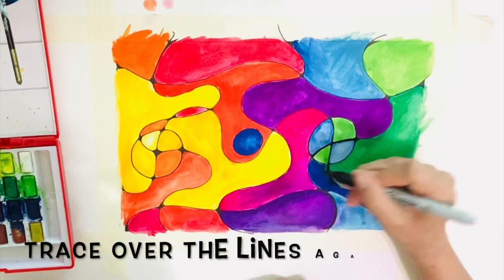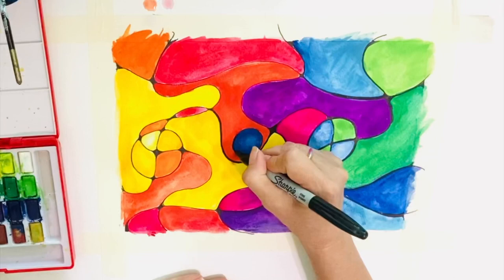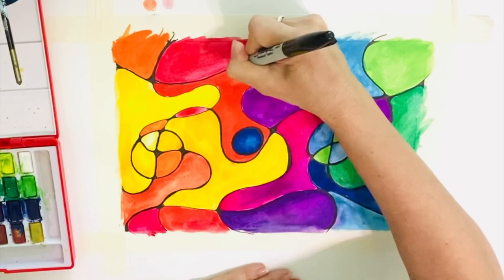Once your colours are dry, go over or trace over your black lines again to make them stand out. At this stage, your piece is complete.